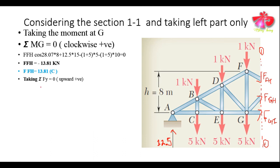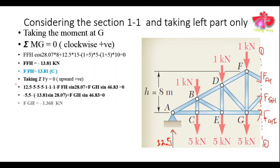To find the remaining two forces, we use another equilibrium condition: taking ΣF_Y = 0 with upward as positive. We find F_GH = −1.368 kN. The negative sign confirms that the force in member GH is also compressive.